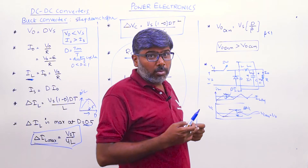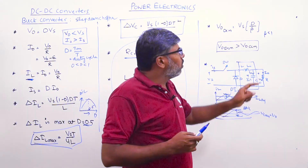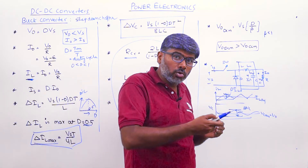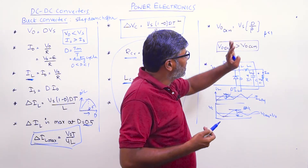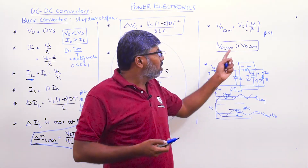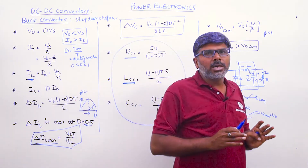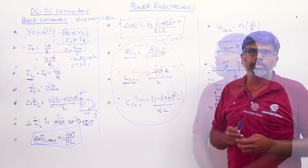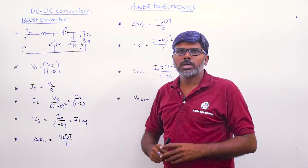In discontinuous conduction mode, the output voltage is V0 = Vs × D / β, where β < 1, meaning the current reaches zero before the desired instant. Substituting β < 1, the average output voltage in DCM is always greater than in CCM. This completes the buck converter analysis under both continuous and discontinuous conduction modes.